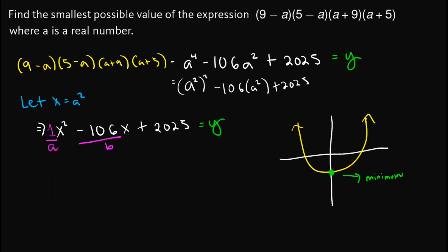So we have at x equals 53, we have 53 squared minus 106 times 53 plus 2,025. And you can verify this one as negative 784.